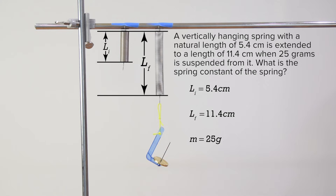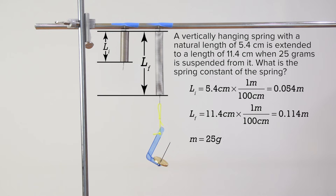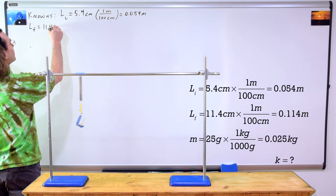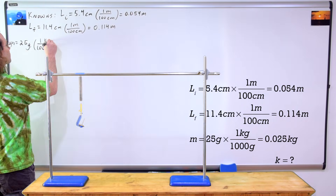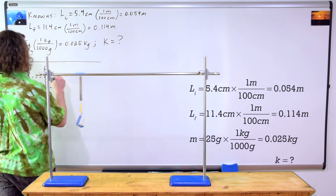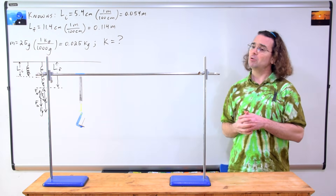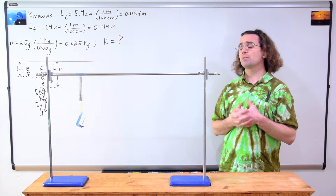We should convert those known values to base SI units by multiplying the lengths by 1 meter divided by 100 centimeters and the mass by 1 kilogram over 1000 grams. We are solving for the spring constant so lowercase k equals question mark. Please begin solving the problem.